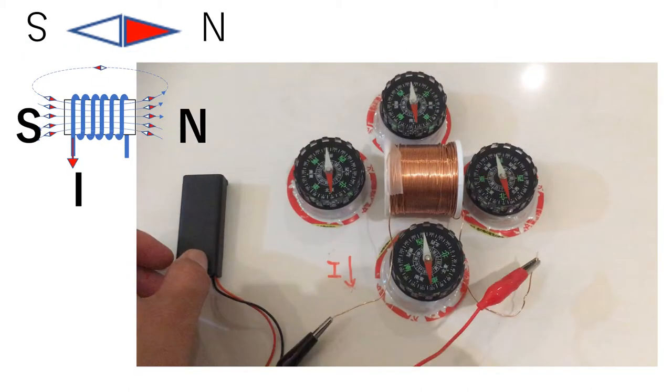When I change the direction of the current, you can see the N is the red side again.